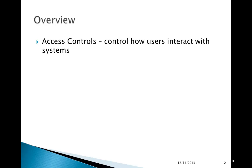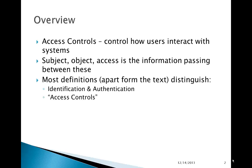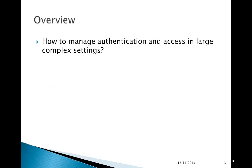Access controls control how users interact with systems. The subject and the object — between those, access is the information passing between these. Most definitions, apart from the text, distinguish identification and authentication from access controls. The text seems to combine these two into a single topic. How do we manage authentication and access in large, complex settings? This is the underlying theme of this whole mini-lecture.